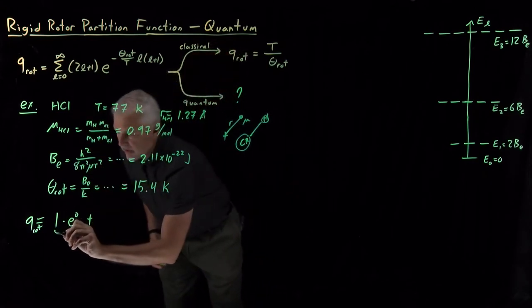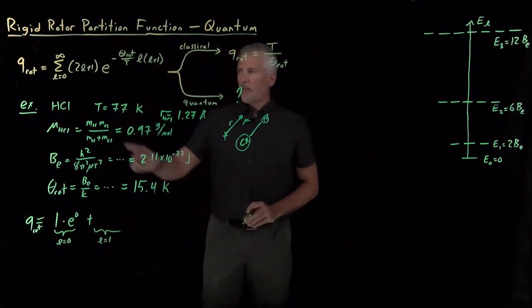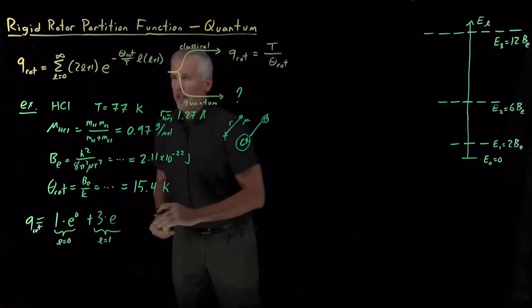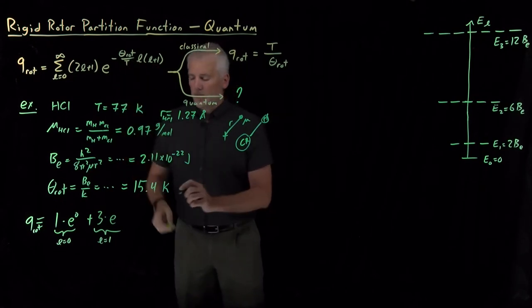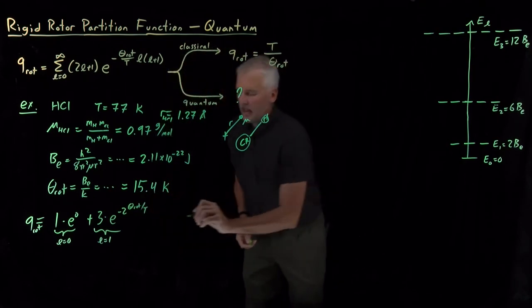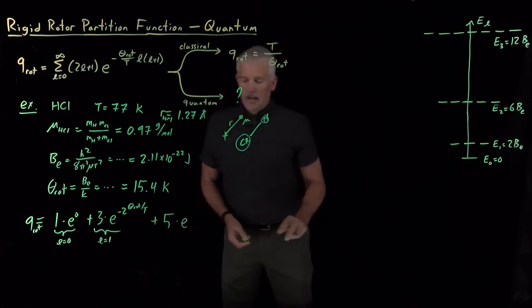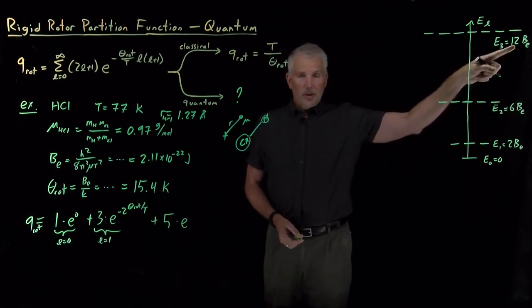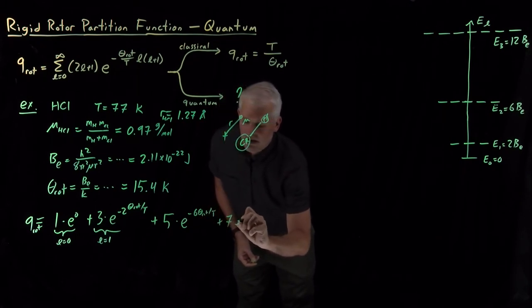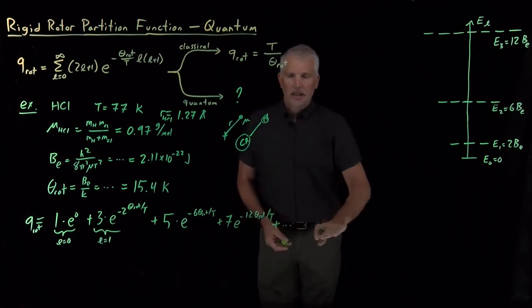The next term is where it gets more complicated. When L equals one, two plus one is three. The degeneracy is three. The Boltzmann factor looks like e to the minus one times two times theta rotational over t. Next term, the degeneracy is five, and then it's e to the minus six. The next term will be e to the minus 12, and so on. So e to the minus six theta rotational over t. And then seven, e to the minus 12 theta rotational over t. And then the bad news is we have a plus dot dot dot that, in principle, goes on forever.